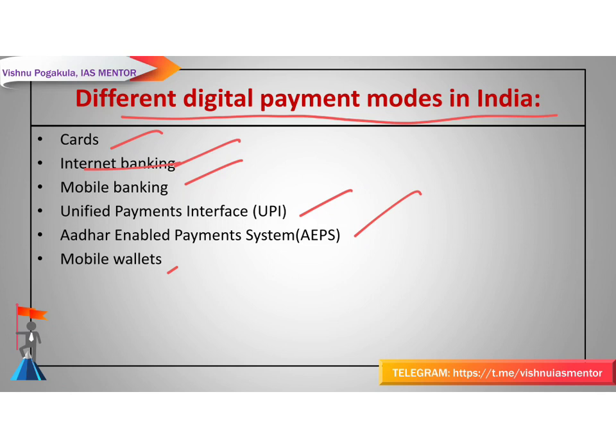Each bank has its own mobile app for this purpose. Next is the Unified Payment Interface, that is UPI. This is a system that powers multiple bank accounts into a single mobile application, merging several banking features and enabling seamless fund routing and merchant payments. Each bank also provides its own UPI app.